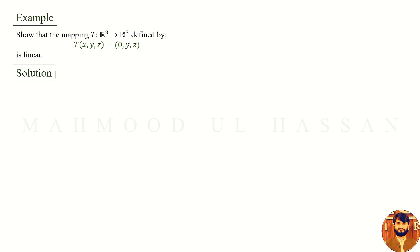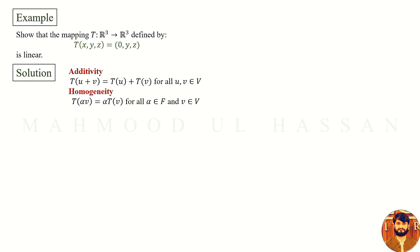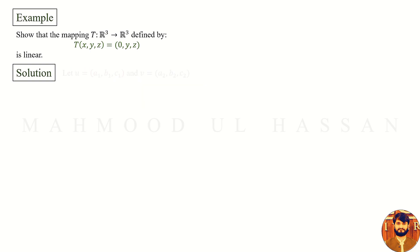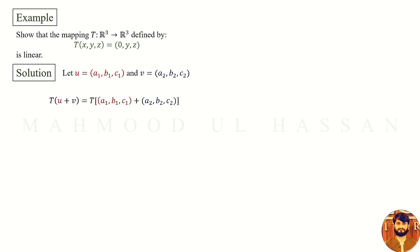For additivity, we take two vectors from R³. Let U = (A1, B1, C1) and V = (A2, B2, C2). By the additivity property, T of U plus V equals T of (A1 plus A2, B1 plus B2, C1 plus C2).